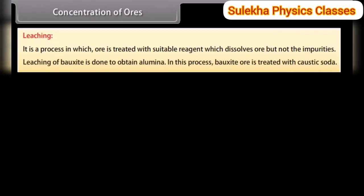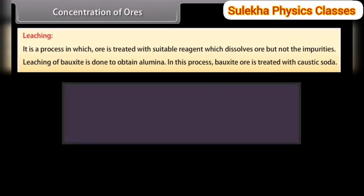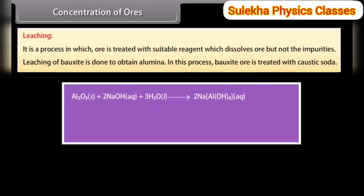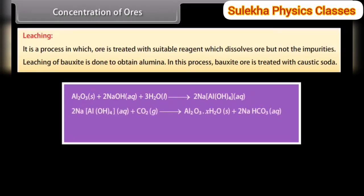Leaching of bauxite is done to obtain alumina. In this process, bauxite ore is treated with caustic soda. Al₂O₃ dissolves in the concentrated solution leaving behind impurities. The aluminate in solution is neutralized by passing CO₂ gas and hydrated Al₂O₃ is precipitated. The precipitate is filtered, dried and finally heated to about 1470 Kelvin to obtain pure Al₂O₃.